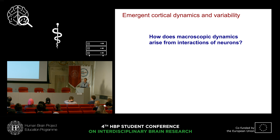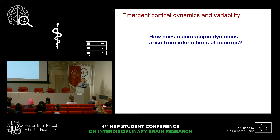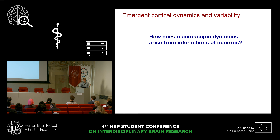One important question is how does macroscopic behavior and dynamics arise from the interactions of all these many neurons? It is known that networks of neurons can produce various dynamical behaviors — for example, oscillations, multi-stability, fixed point attractor dynamics, line attractor dynamics, etc. These dynamics on the macroscopic level have been implicated in various brain functions, such as working memory or decision-making. So it's important to understand the dynamics that emerge in the brain.